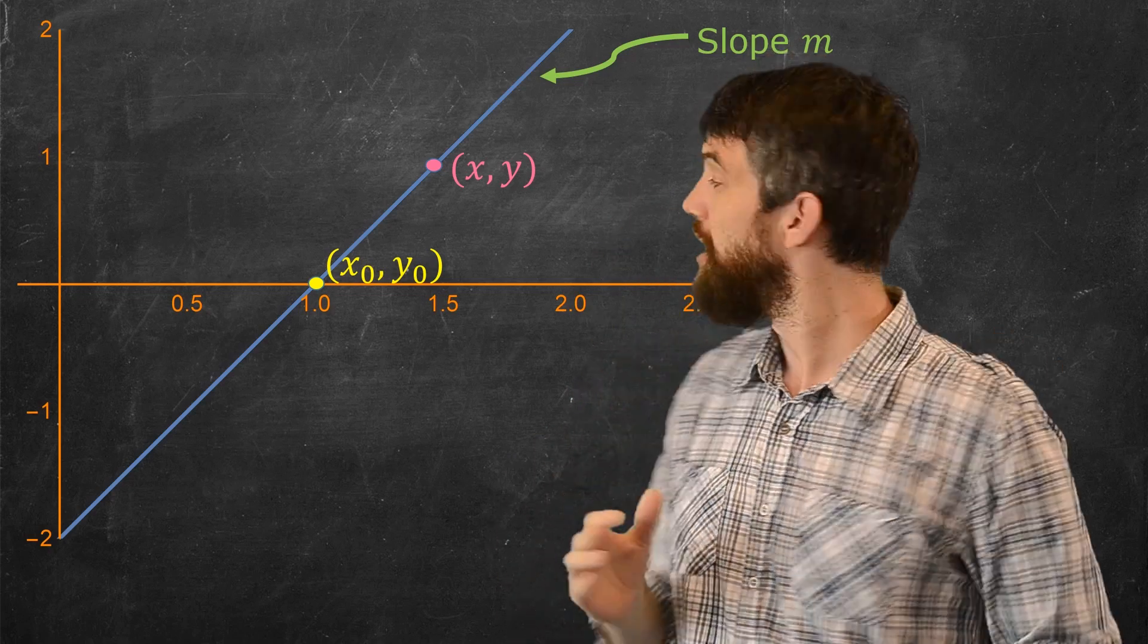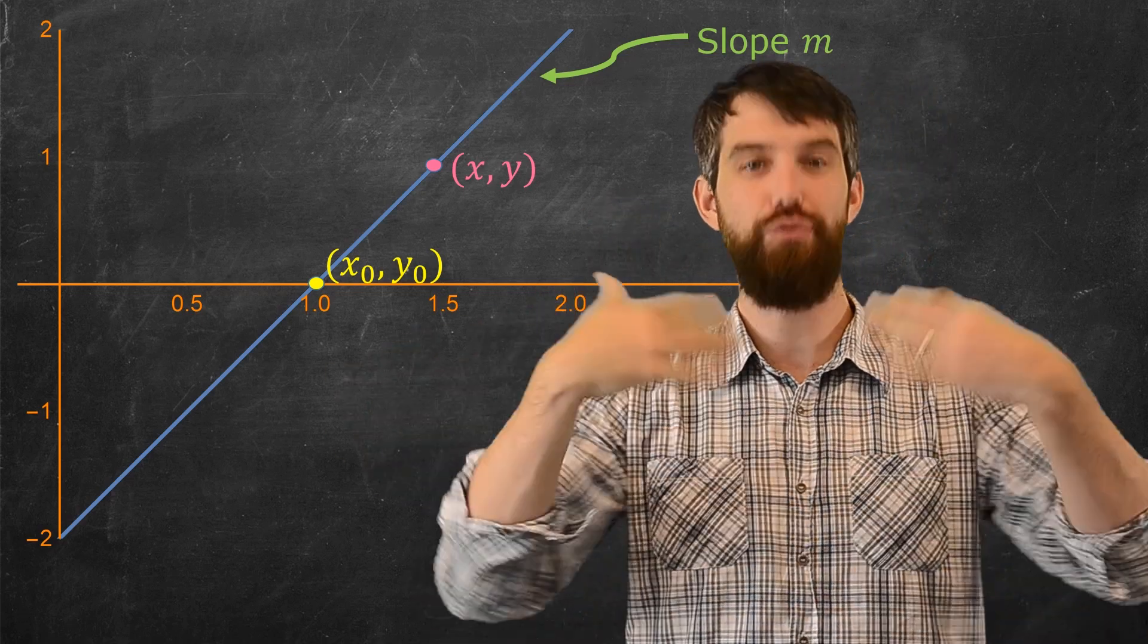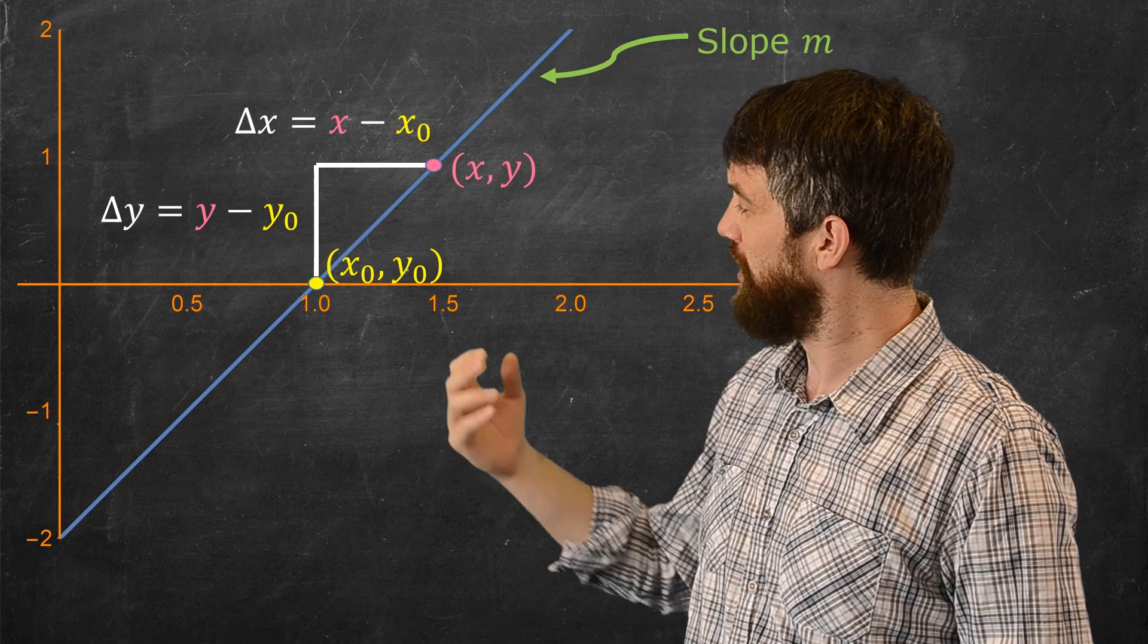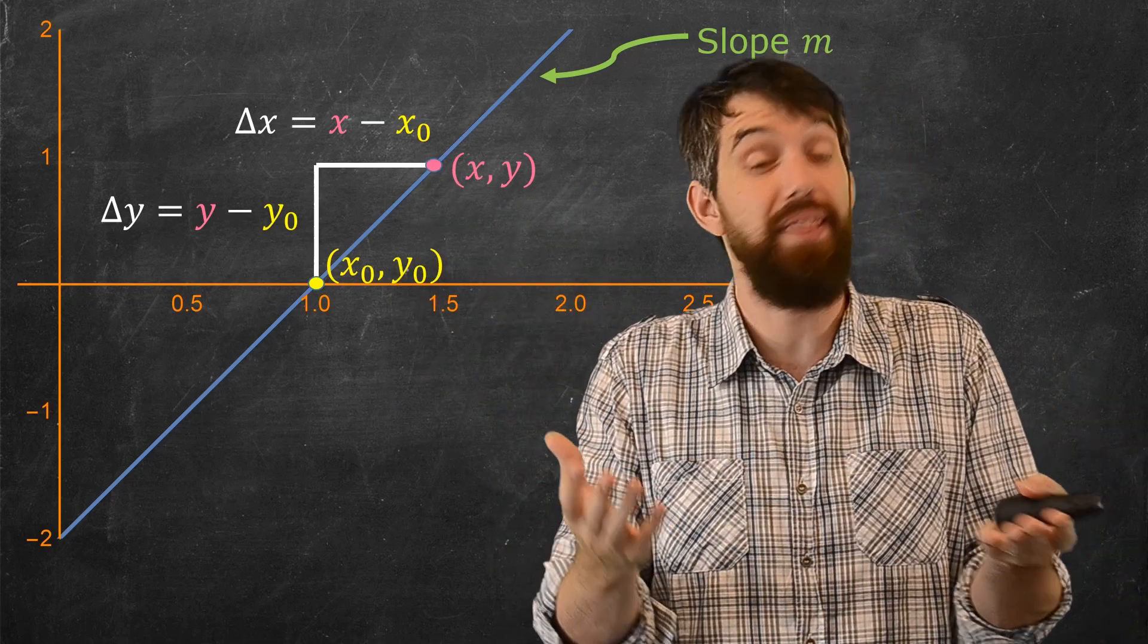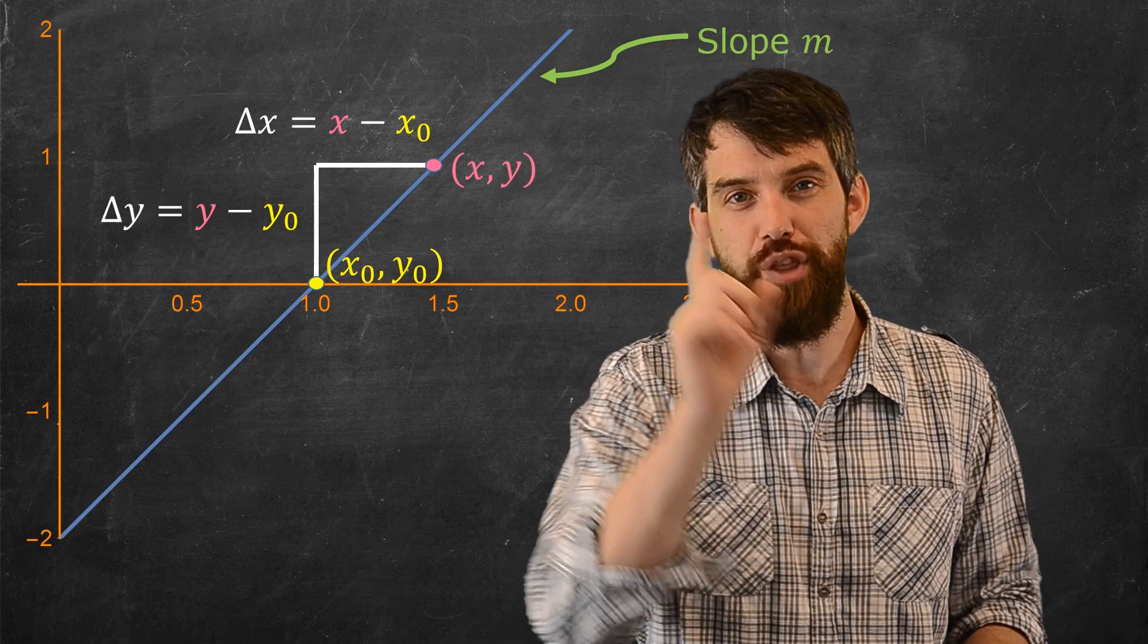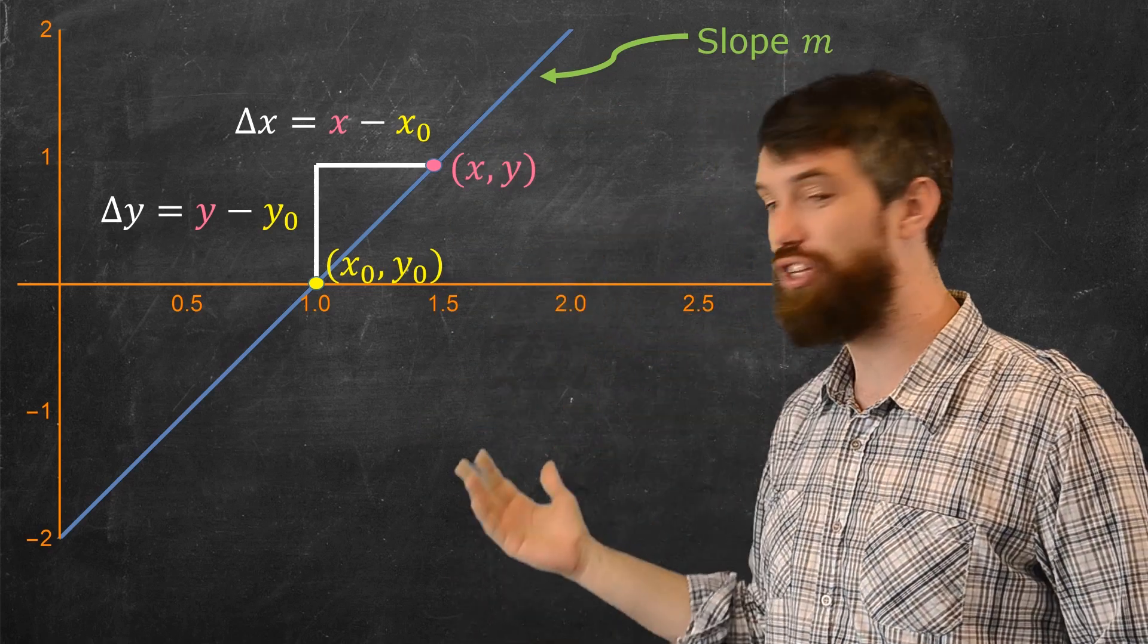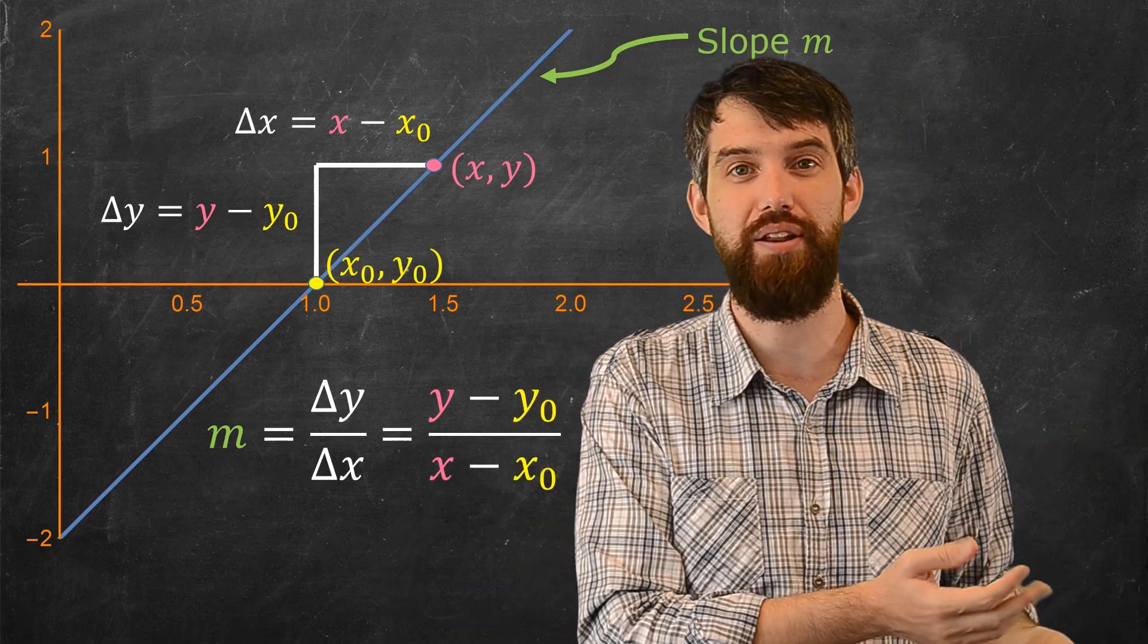Now, the idea of slope is this. Between the x, y and the x₀, y₀, there is a little bit of rise and a little bit of run. There's a little bit of change in x and a little bit of a change in y. We often use this symbol delta x and delta y here to denote this change, but it's just the difference in the x values or the difference in the y values.